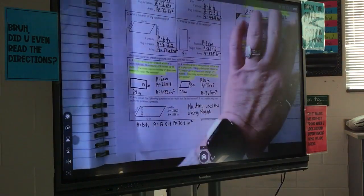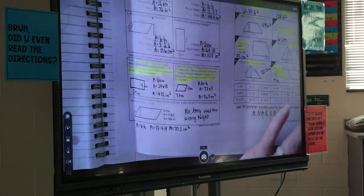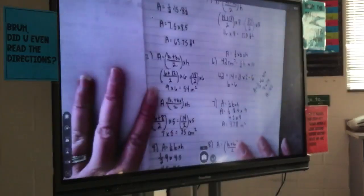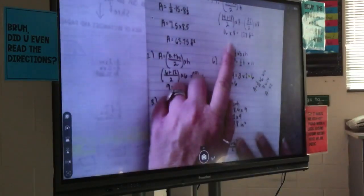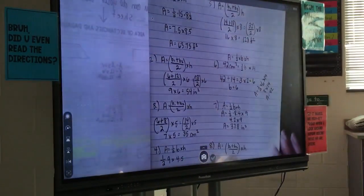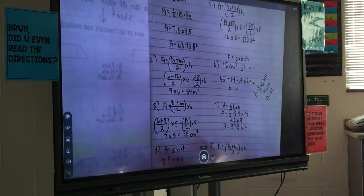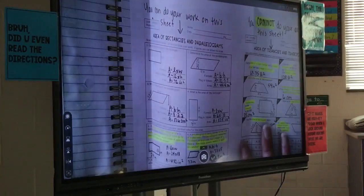Does that make sense? So then that one would just be 14 plus 18 divided by 2 times 8. And that would be this work right here. Any other questions? Trapezoids are definitely going to be probably the more difficult just because it requires you to do more steps.